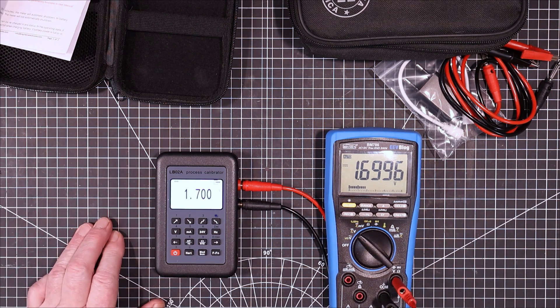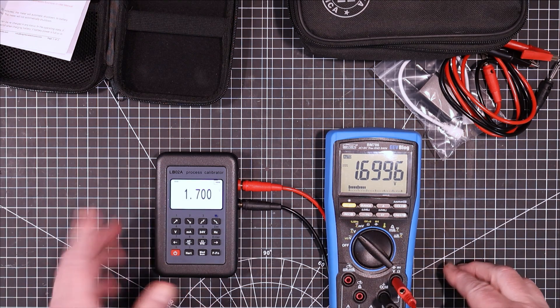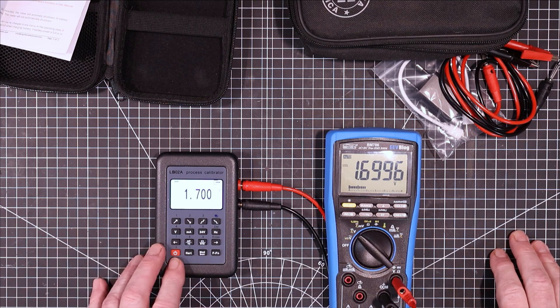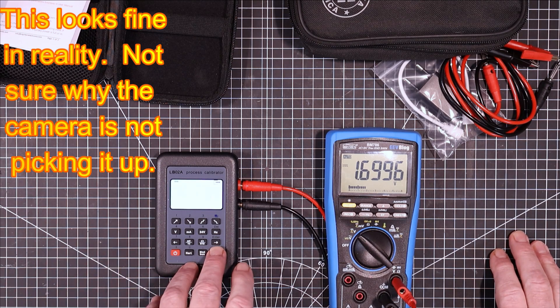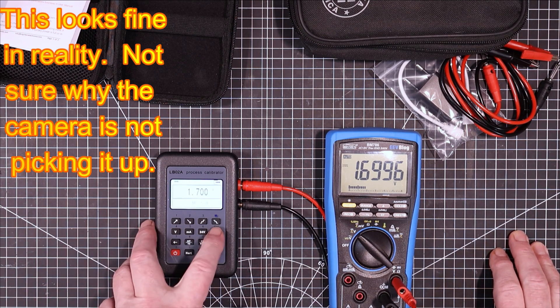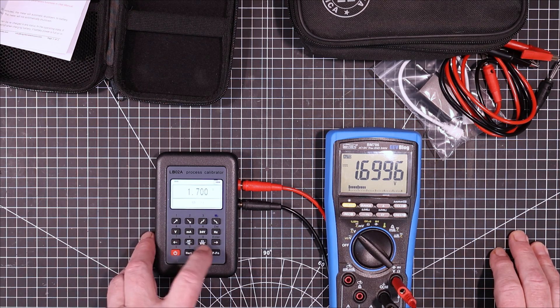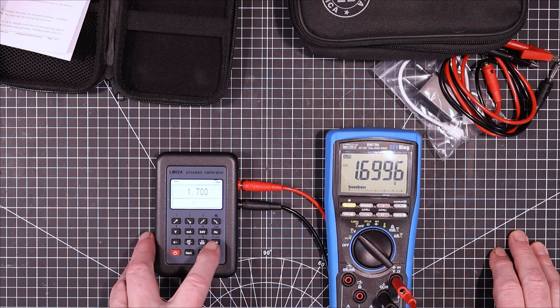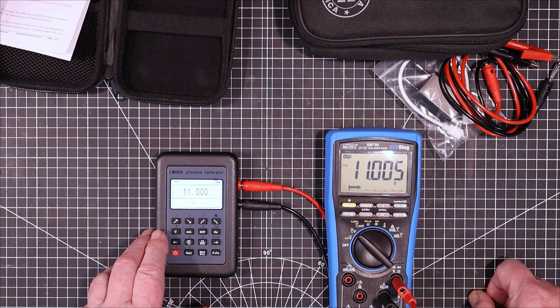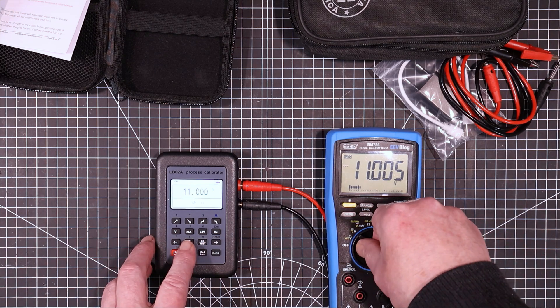So let's have a look at some of the basic functions here. I've got it outputting just a voltage. And if we go into here we get full functionality. And we can put in whatever voltage we want. And send that out to the meter. Let's try some smaller voltages here. Let's go to the millivolt range.